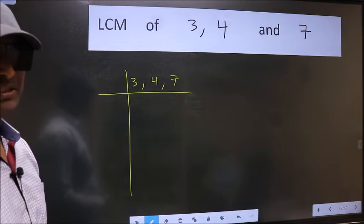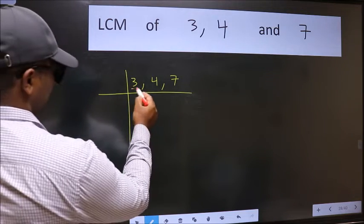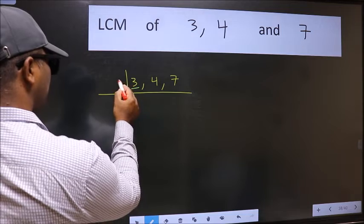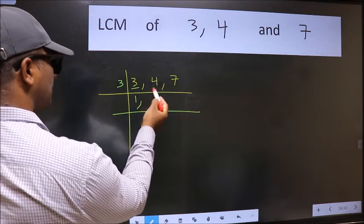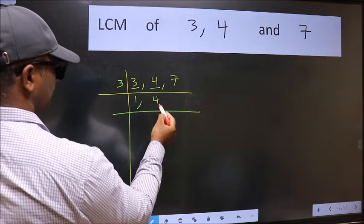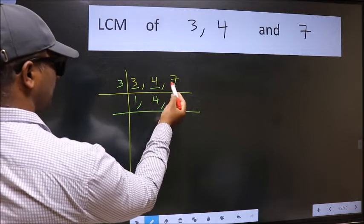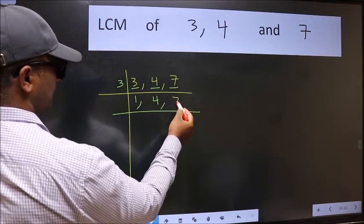Now we should focus on the first number which is 3 here. 3 is a prime number, so 3 goes into 3 once. The other number 4 not divisible by 3, so we write it down as it is. The other number 7 not divisible by 3, so we write it down as it is.